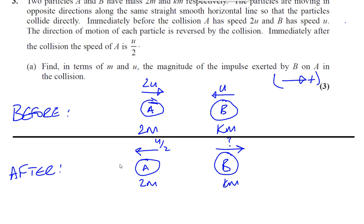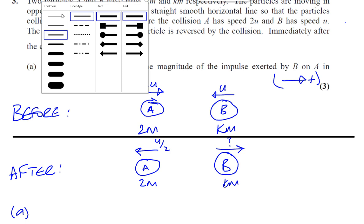That's before, that's after. So for part A, we just need to look at one thing. And that's basically, we need to look at the fact that we're looking for the impulse. Now, the impulse is basically the change of momentum of an object. Momentum is mass times velocity.